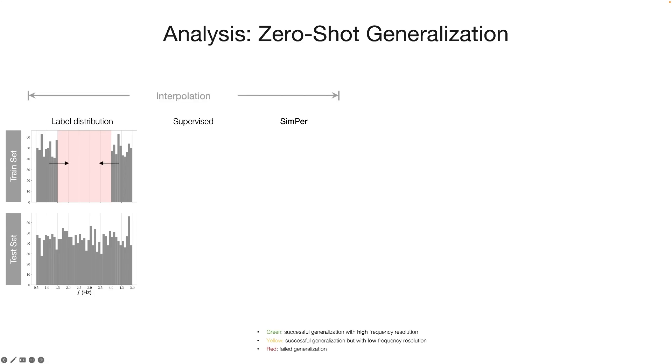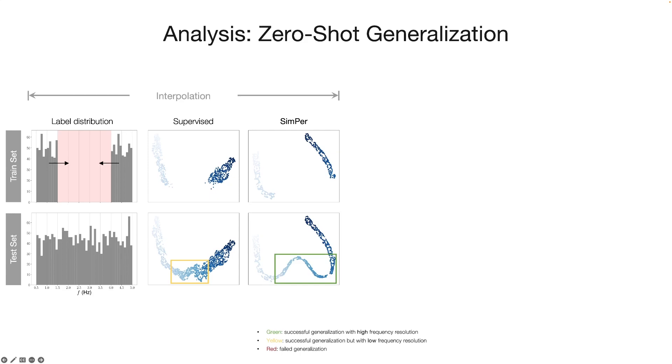In the first example, we remove the frequency targets in the middle of the range, which corresponds to the interpolation case. For supervised learning, we observe that the model can interpolate missing targets reasonably well, although the resulting frequency resolution is relatively low in the interpolation range. In contrast, SIMPER learns better representations with higher frequency resolution.